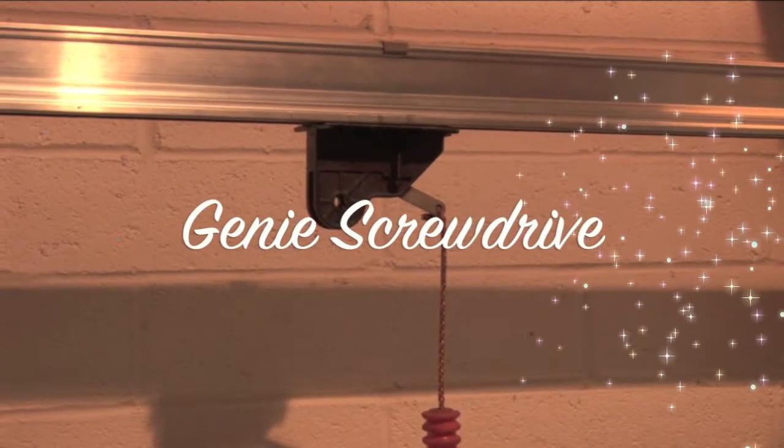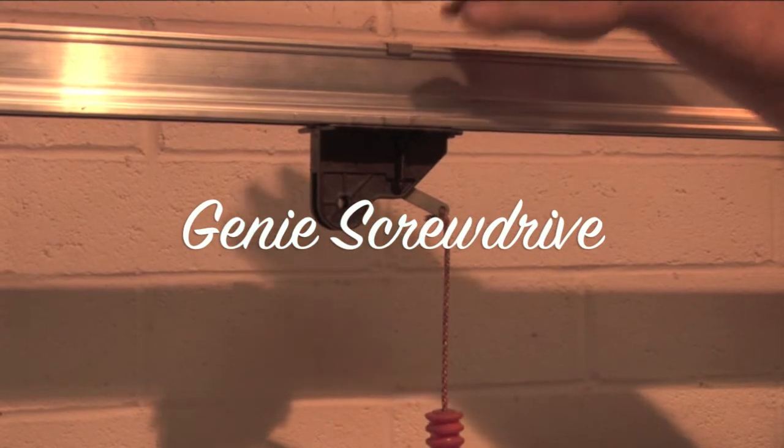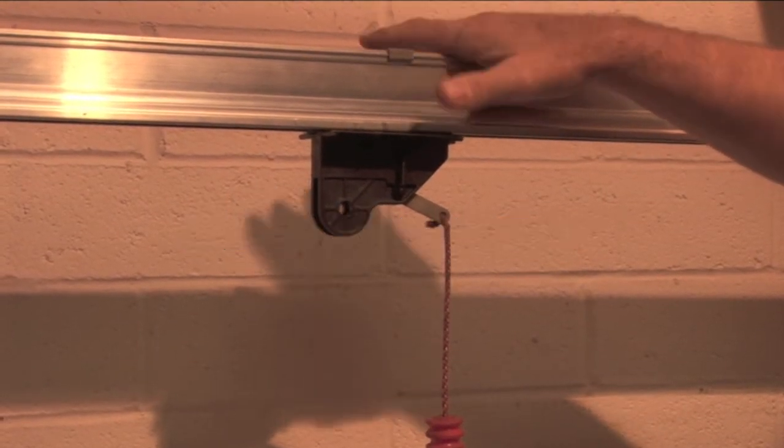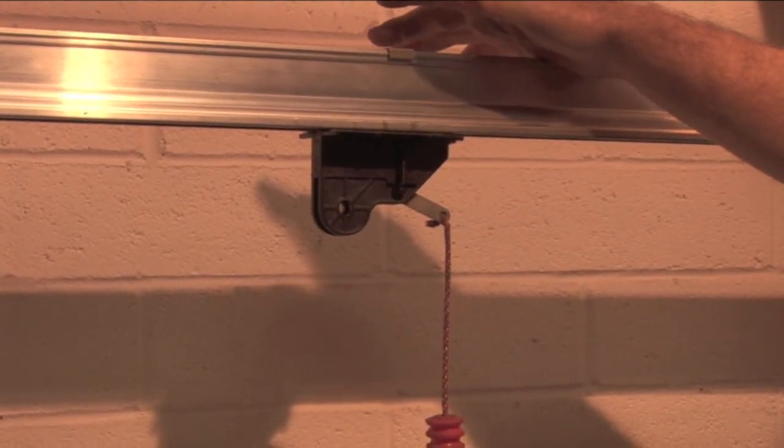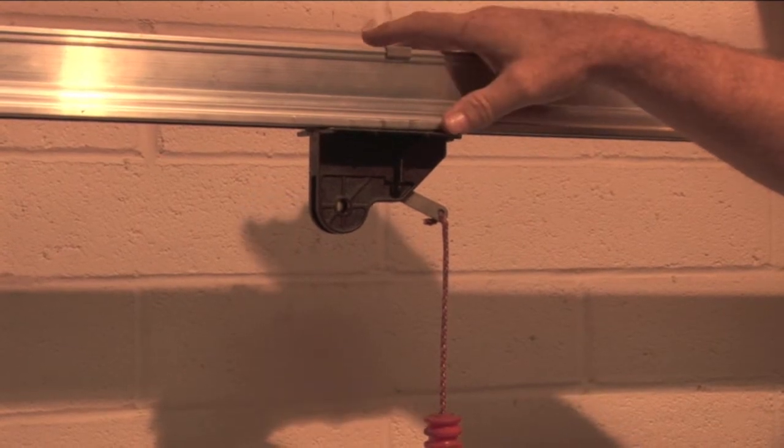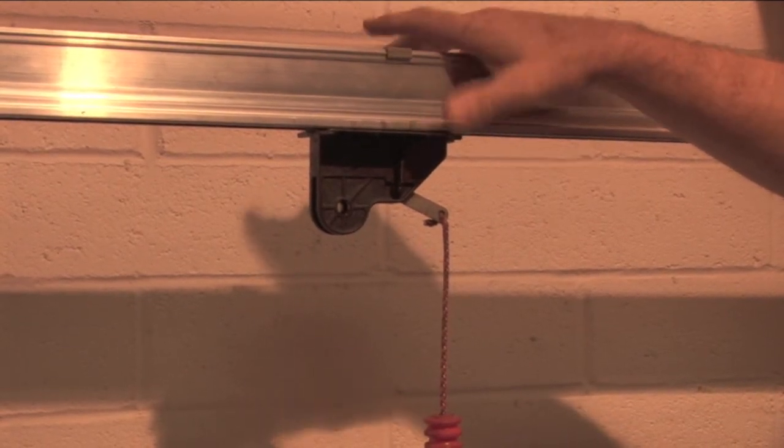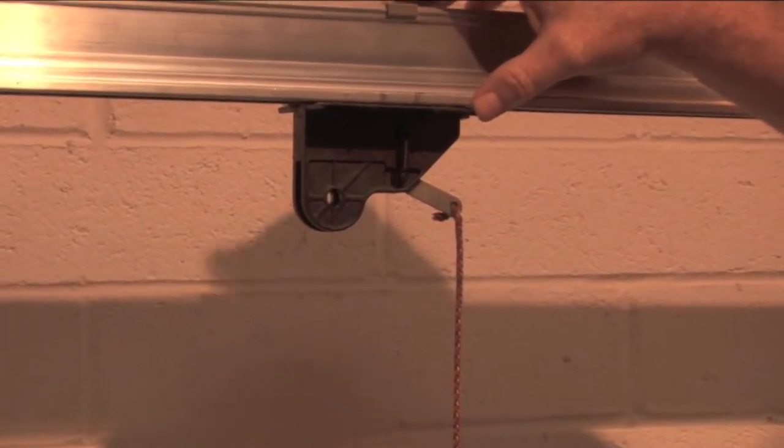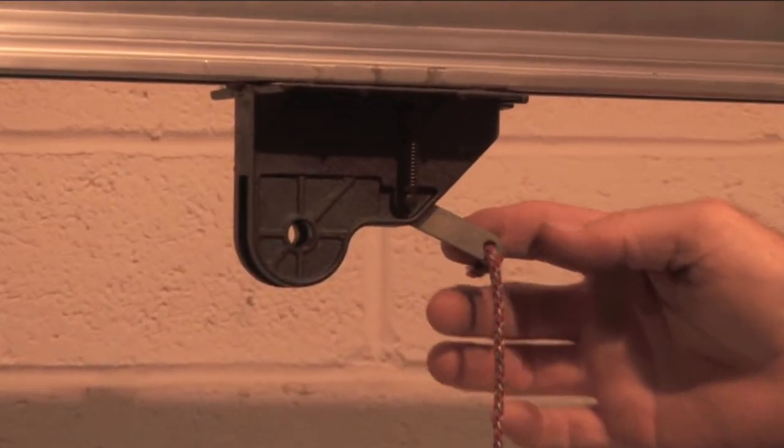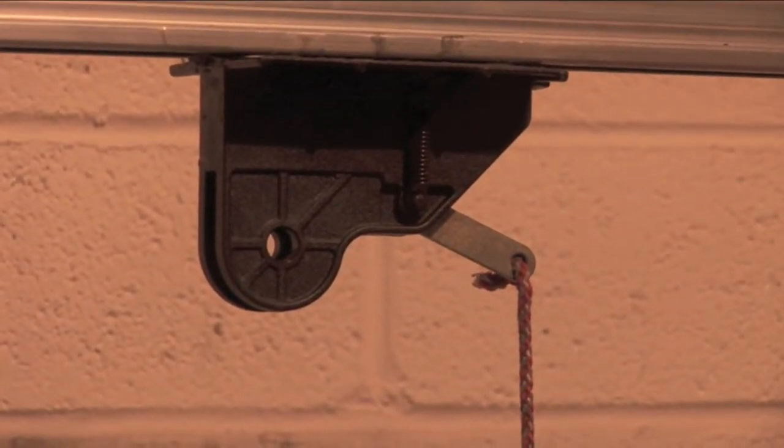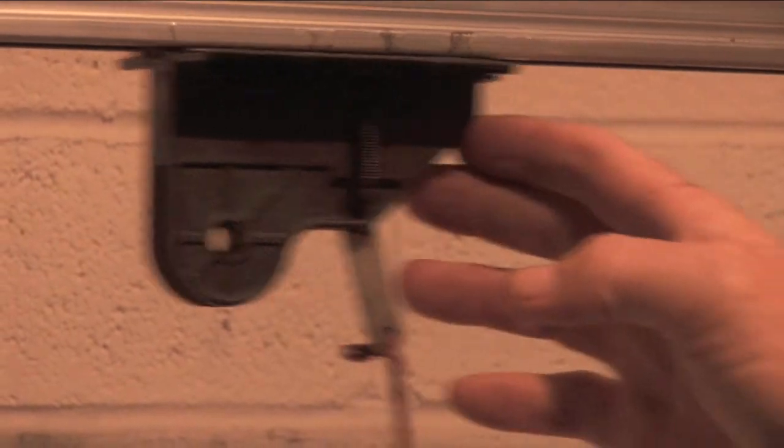Moving on to the genie screw drive. This machine utilizes a one-piece trolley design - no inner, no outer, it's all one piece. You see that metal bar comes out into the pull rope. Pull that down and you're on manual.